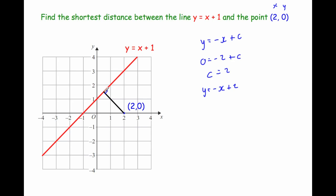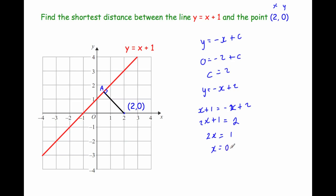Now we want to find point A — the coordinates of where the two lines intersect — using simultaneous equations. We've got the red line y equals x plus 1 and the black line y equals minus x plus 2. Using substitution, replace y with x plus 1: x plus 1 equals minus x plus 2. Adding x to both sides: 2x plus 1 equals 2. Subtracting 1: 2x equals 1. Dividing by 2: x equals 0.5.